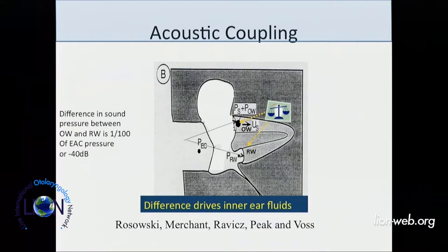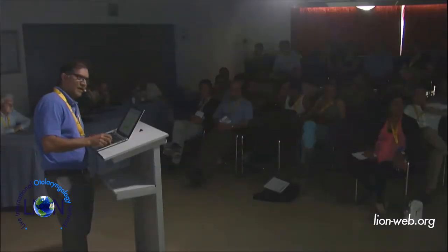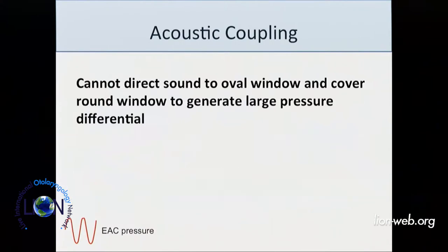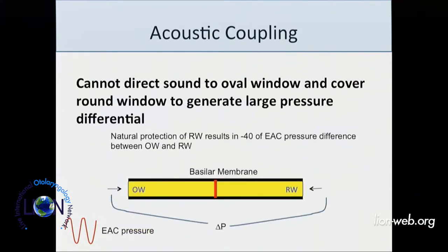If you don't have a middle ear, things become more difficult. If you're missing the ossicles, you can still drive the inner ear fluids a little, driven by the pressure in the ear canal. The difference between the pressure at the two windows is only about a hundredth of the ear canal pressure — about minus 40 dB. With acoustic coupling, the round window pressure is applied almost equally to both windows. If you can shield the round window, you get a much bigger differential — so with acoustic coupling, round window shielding becomes much more important.